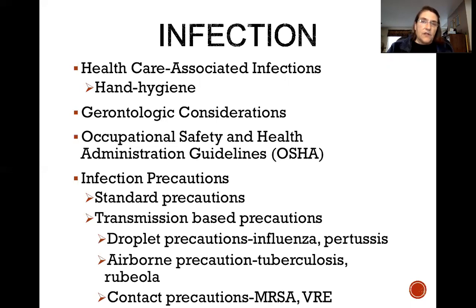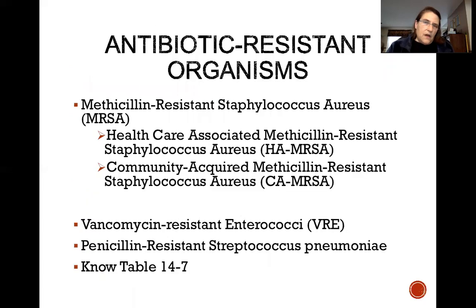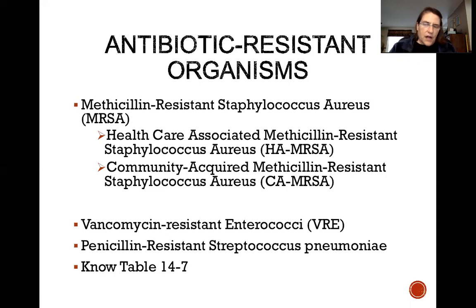There are a couple of antibiotic-resistant organisms we need to talk about. We have methicillin-resistant Staphylococcus aureus — MRSA — which has morphed twice. We now have healthcare-associated MRSA (HA-MRSA) and community-acquired MRSA (CA-MRSA). We also have vancomycin-resistant Enterococci (VRE) and penicillin-resistant Streptococcus pneumoniae. See Table 14-7 in your text for more detail.